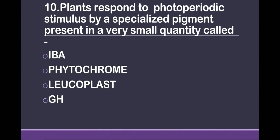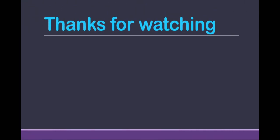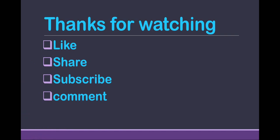Question 10: Plants respond to photoperiodic stimulus by a specialized pigment present in very small quantities called — IBA, phytochrome, leucoplast, or growth hormone? The answer is phytochrome — the specialized pigment present in very small quantities in plants.